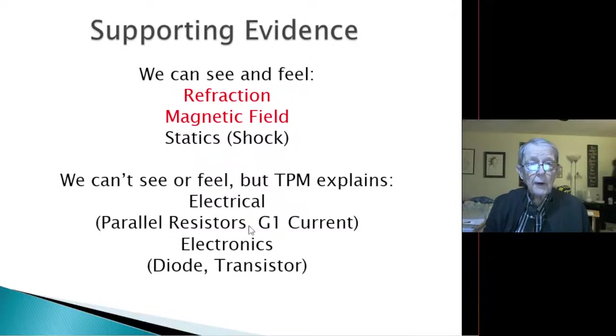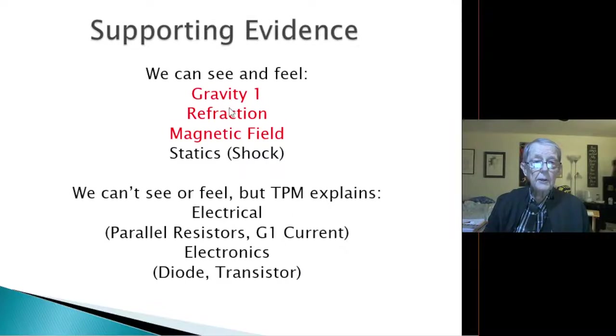Okay, so we have supporting evidence, and right here I realize I didn't put gravity in. We have supporting evidence where gravity, gravity 1 supports it, refraction, and magnetic field. This is by the way the list of other ones I'm going to be going through in the next videos. See, there's the gravity 1. I didn't copy this slide over to the other one. These are the extra ones. I'm going into statics. I'll go into electrical with parallel resistors and G1 current through a circuit. And then I'll go through electronics where I can access the diode in the transistor.